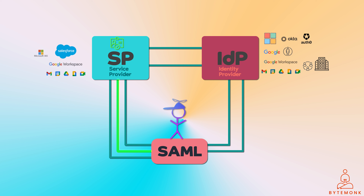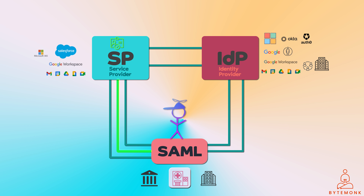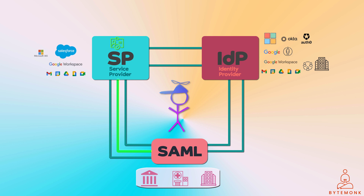SAML is favored where strong identity federation and SSO are critical — including government institutions, healthcare organizations, and enterprises. Government agencies require robust identity verification for sensitive systems, making SAML a good fit. Healthcare providers handle sensitive patient data, and SAML ensures only authorized personnel can access it. SAML enables employees to access various applications without repeated logins, enhancing productivity and security. While OAuth can be extended for authentication via OpenID Connect, SAML excels in scenarios requiring strong identity assurance. SAML promotes secure authentication and data exchange, and with SSO, different organizations can trust each other's identities without sharing passwords.